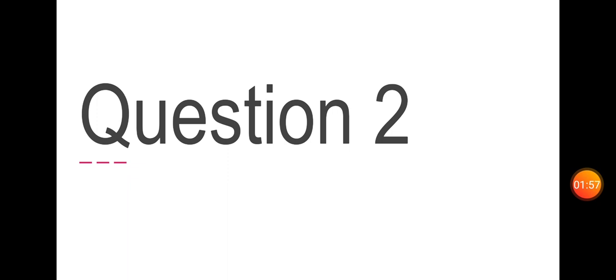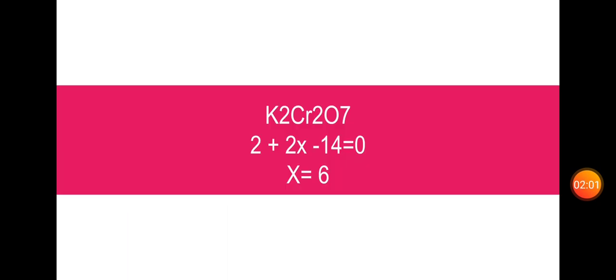Question number 2, concept number 2: K2Cr2O7 — what is the oxidation state of Cr? Potassium is plus 1, so 2 potassium gives 2. Setting up the equation: 2 plus 2x minus 14 equals zero. Solving, x equals plus 6.